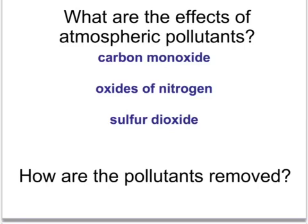Carbon monoxide is removed by using a catalytic converter on the car, as are oxides of nitrogen. Sulphur dioxide is removed from the emissions of power stations by reacting it with a base — a substance that reacts with this acidic gas to make a safe product.